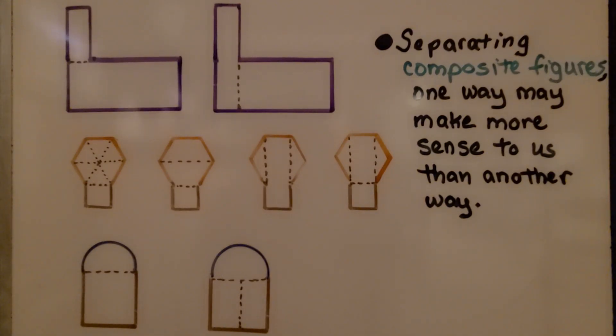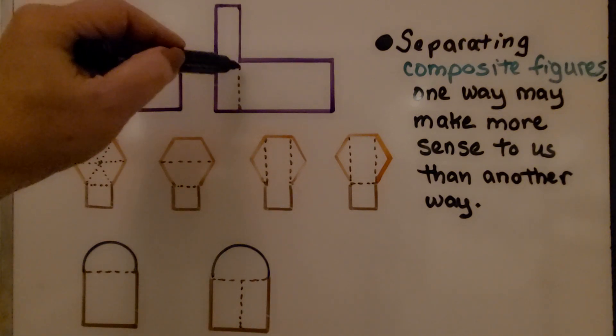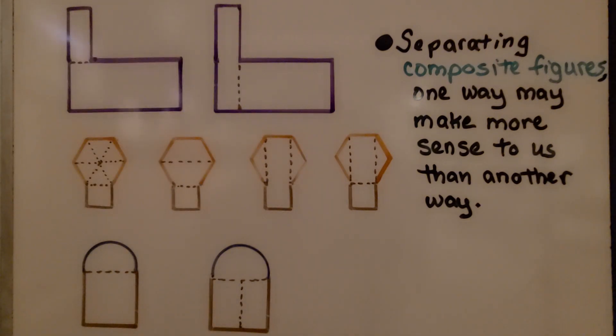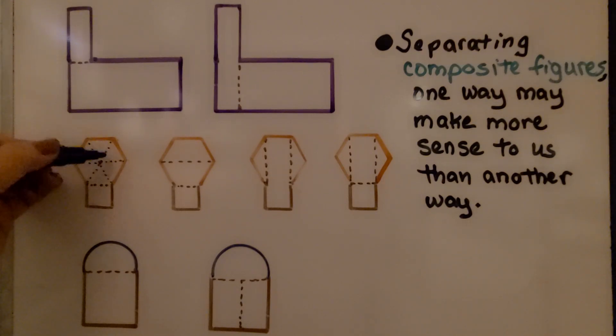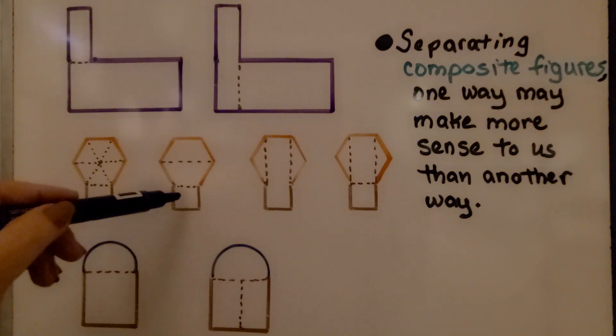Separating composite figures one way may make more sense to us than another way. We can split this composite figure into two rectangles, like this, a smaller one and a much larger one. We could even bring our dotted line down like this and separate it into a very long rectangle and that rectangle. Now, here we have a hexagon above a square. Would you want to find the area for six triangles and the area for a square? Or would you rather find the area for two trapezoids and a square?